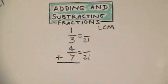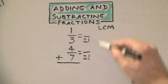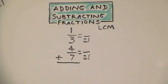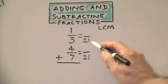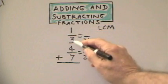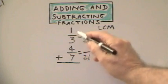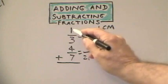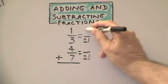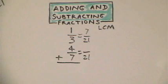Once we have that number, we make it the denominator for both fractions. Now, we take the 21 divided by the 3 to get 7. We take that 7, multiply it by 1, and we've got 7 as our numerator.